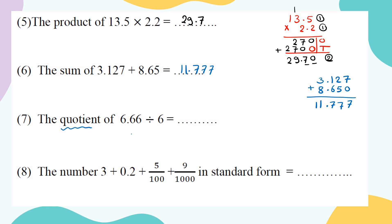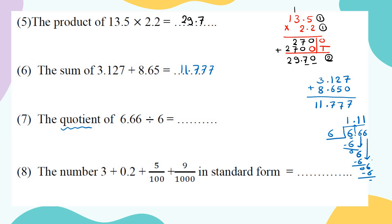The quotient of 6.66 divided by 6: the dividend goes inside the house — 6.66 divided by 6. Underline one digit: 6 divided by 6 = 1; 1 times 6 = 6; subtract to get 0. See the decimal, kick it up. Bring down 6: 6 divided by 6 = 1; subtract 0. Bring down 6: 6 divided by 6 = 1; subtract 0. Answer is 1.11.